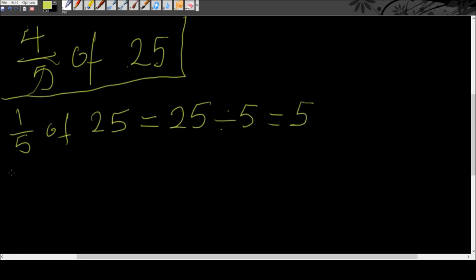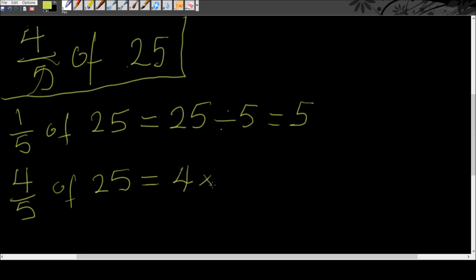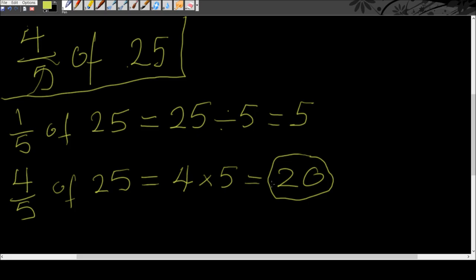Now we want to find four-fifths of 25. What do you think we're going to multiply one-fifth by? Yes — we're going to multiply it by 4. So four-fifths of 25 is equal to 4 times 5, which gives us 20. So four-fifths of 25 is equal to 20 — that's the answer.